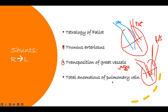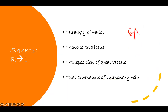Total anomaly of pulmonary veins means the pulmonary vein — which normally returns oxygenated blood from the lung to the left atrium — is missing or abnormal. These patients don't have it, which is not compatible with life. All these patients need surgery right away and are symptomatic as soon as they are born.